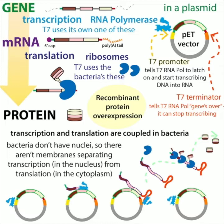With overexpression you can get like 50% of the proteins the bacteria makes to be your protein, which is awesome — unless it means the bacteria can't grow. Basically what we want to do is let the bacteria grow enough to get a large stock. We're building our workforce and then putting them to work, rather than just hiring a few people. In order to do this, we control when T7 RNA polymerase is expressed.